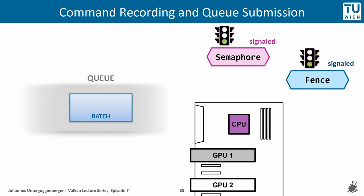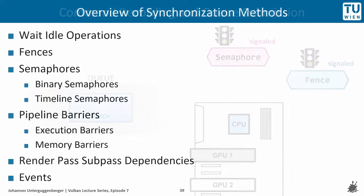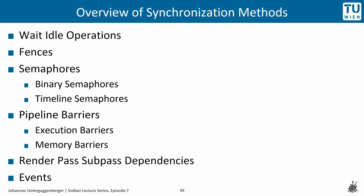Let me show an overview of the different synchronization methods in Vulkan. We will discuss all of them during this episode — some in depth, others more briefly. All of them are tools to synchronize between different commands or operations, some on the device and some on the host. Let us start with the heaviest of all synchronization methods: wait idle operations.